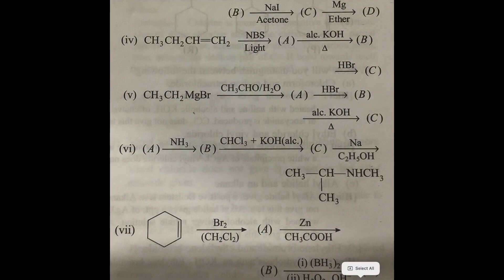In this organic conversions discussion, we have CH₃CHBrCH₃, which is 2-bromopropane. When 2-bromopropane is treated with alcoholic KOH, it undergoes dehydrohalogenation, and you get propene as the product.